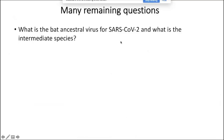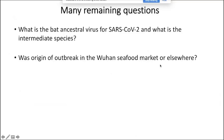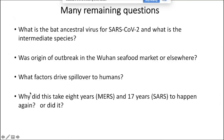We have many remaining questions: What is the bat ancestral virus for SARS-CoV-2, and what is the intermediate species? Was the origin of the outbreak in the Wuhan seafood market or elsewhere? What factors drive spillover to humans? Why did it take eight years for MERS or 17 years for a second SARS to emerge? Or were there other spillovers of coronaviruses into humans that were simply not very pathogenic and went unnoticed?